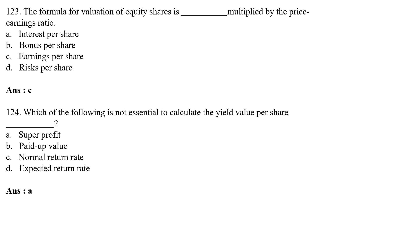Which of the following is not essential to calculate the yield value per share? Option A: super profit; Option B: paid-up value; Option C: normal rate of return; Option D: expected rate of return. The correct answer is super profit — super profit is not essential to calculate the yield value per share.